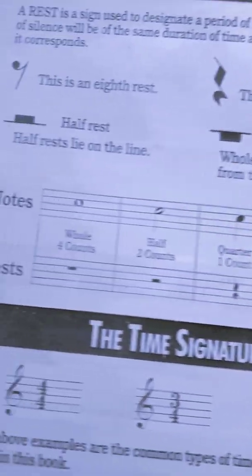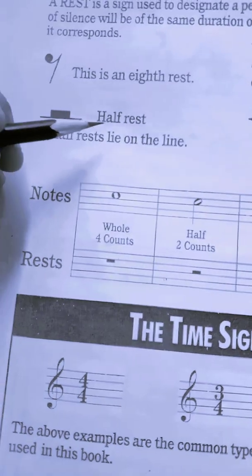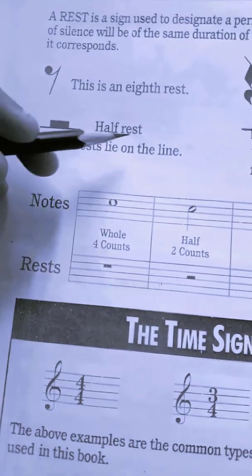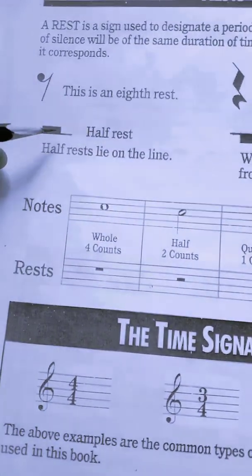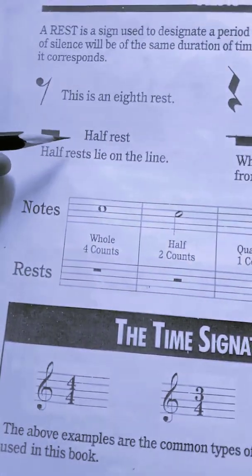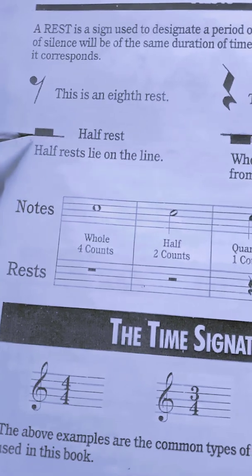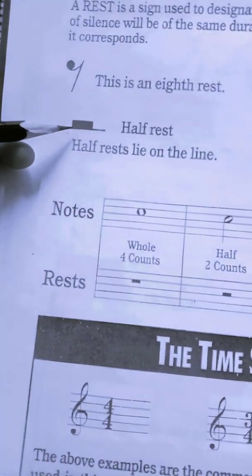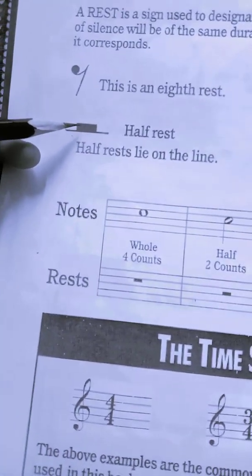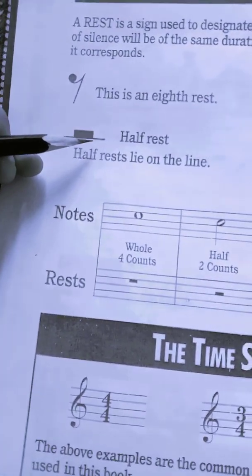The next rest we are going to learn is a half rest. A half rest lies on the line instead of below the line. So there is a horizontal line and the half rest lies on the line.